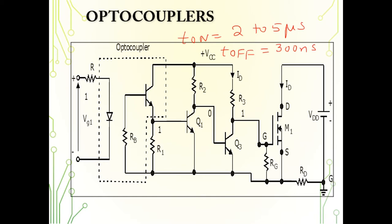The photo transistor circuit is typically a Darlington pair. This Darlington pair, which is the photo transistor, requires a separate supply. By using pulse transformers and optocouplers, you can achieve isolation between the high-power converter circuit and the low-power logic circuit. Thank you.